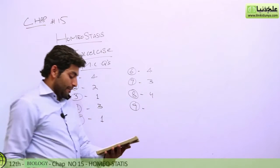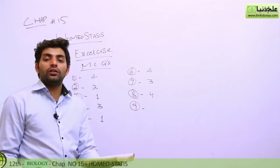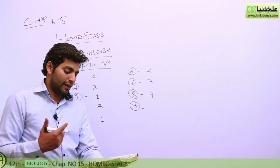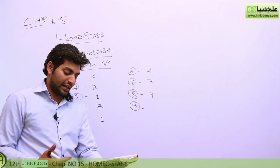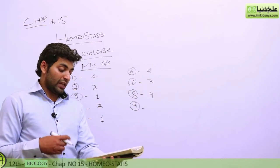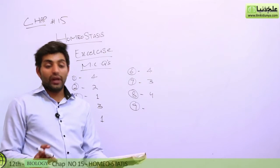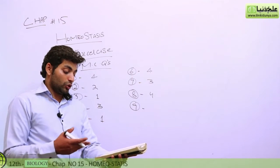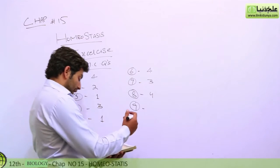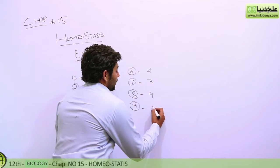The ninth MCQ asks which of the following is not an endotherm. Birds, flying insects, and mammals are endotherms. Amphibians are not endotherms, so the answer is B — amphibians.